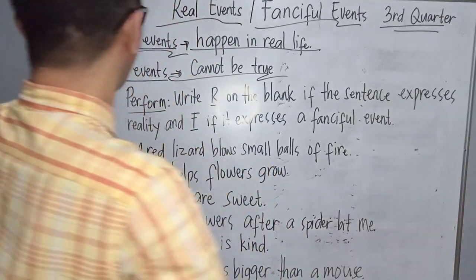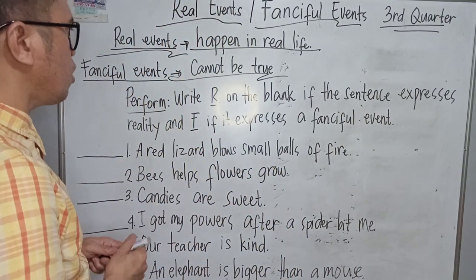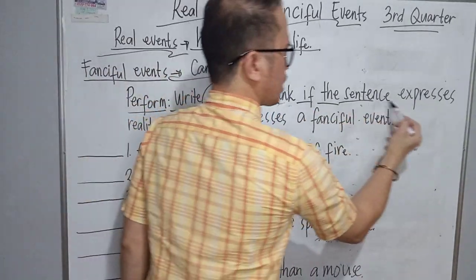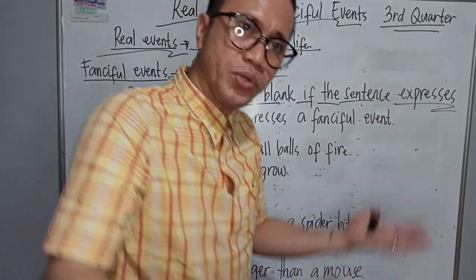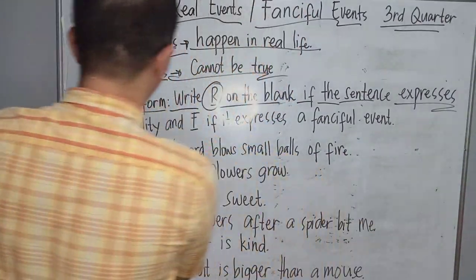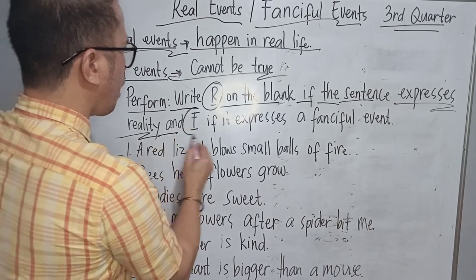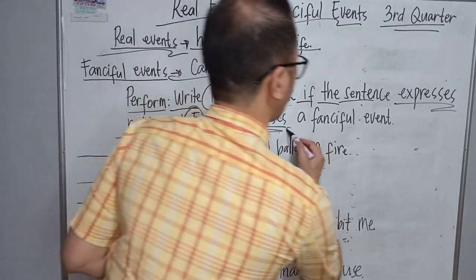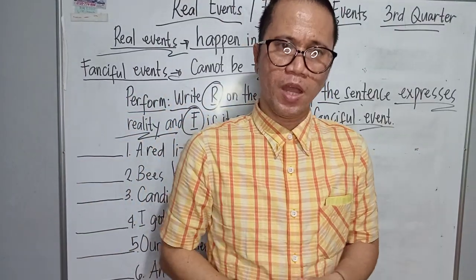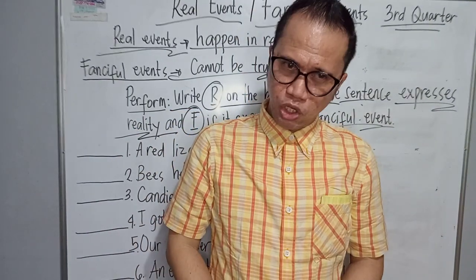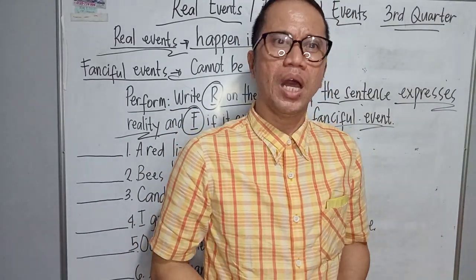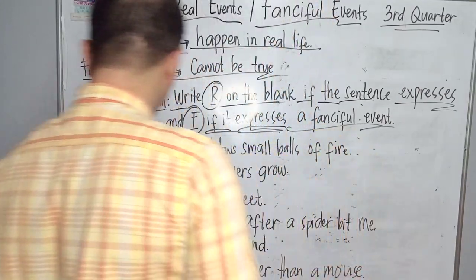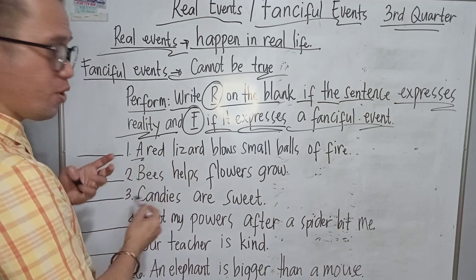The direction says we are going to write F for fanciful events or R for real events. Please keep on watching as we discuss each item one by one. Let's start with number one — please follow, guys.